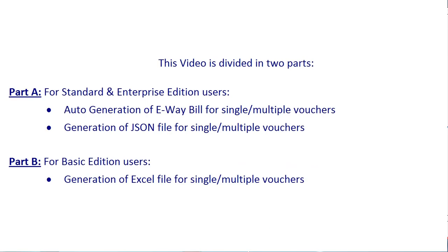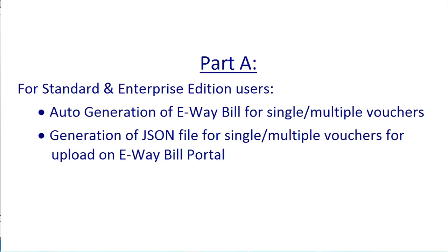This video is basically divided into two parts. Part A is for standard and enterprise edition users, which will include auto generation of e-way bill for single and multiple vouchers, and generation of JSON file for single and multiple vouchers. In Part B we'll discuss about the basic edition users, in which we'll see the generation of Excel file for single and multiple vouchers.